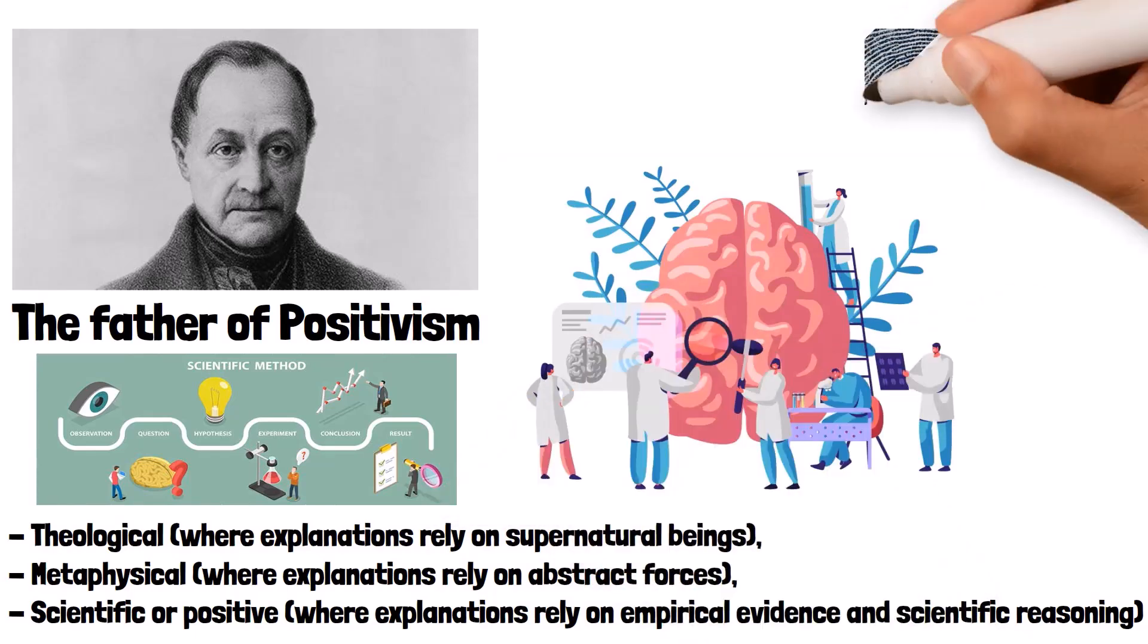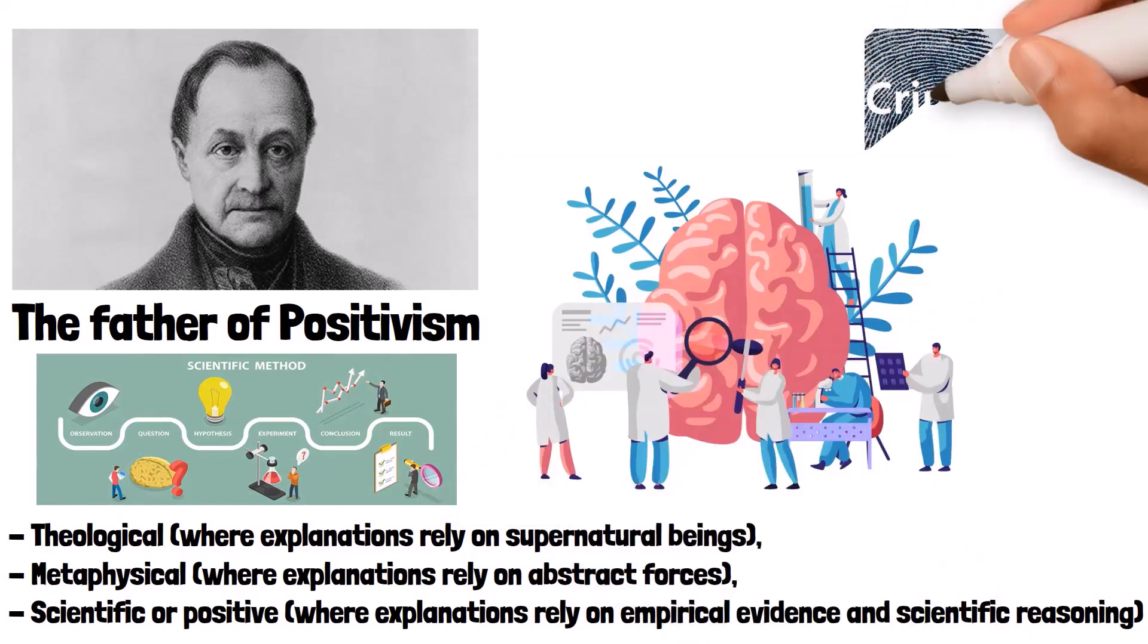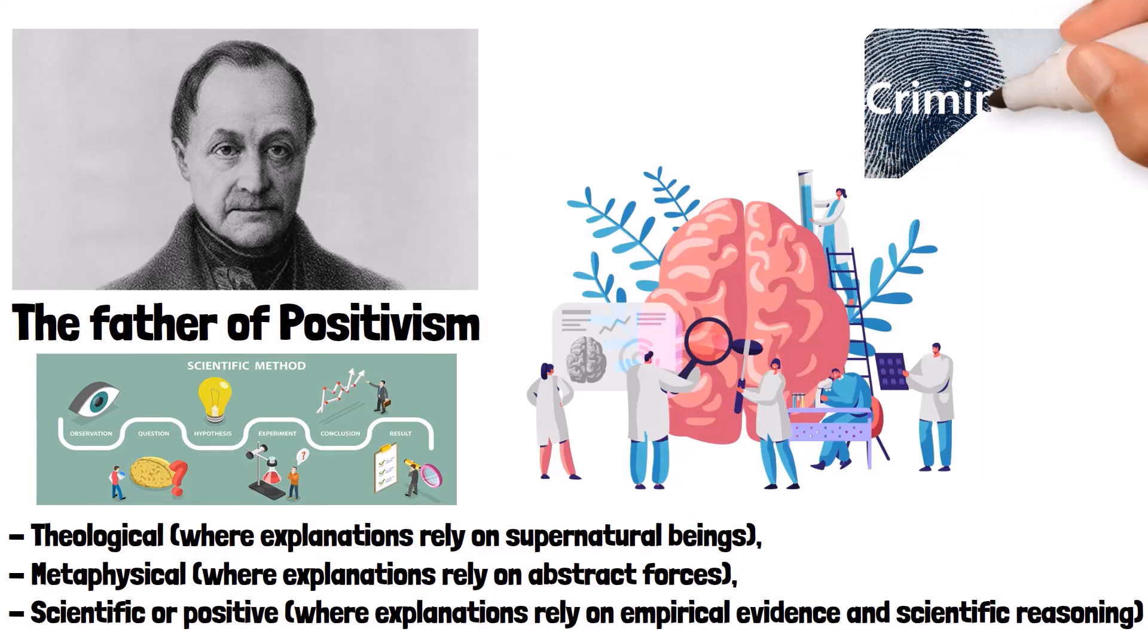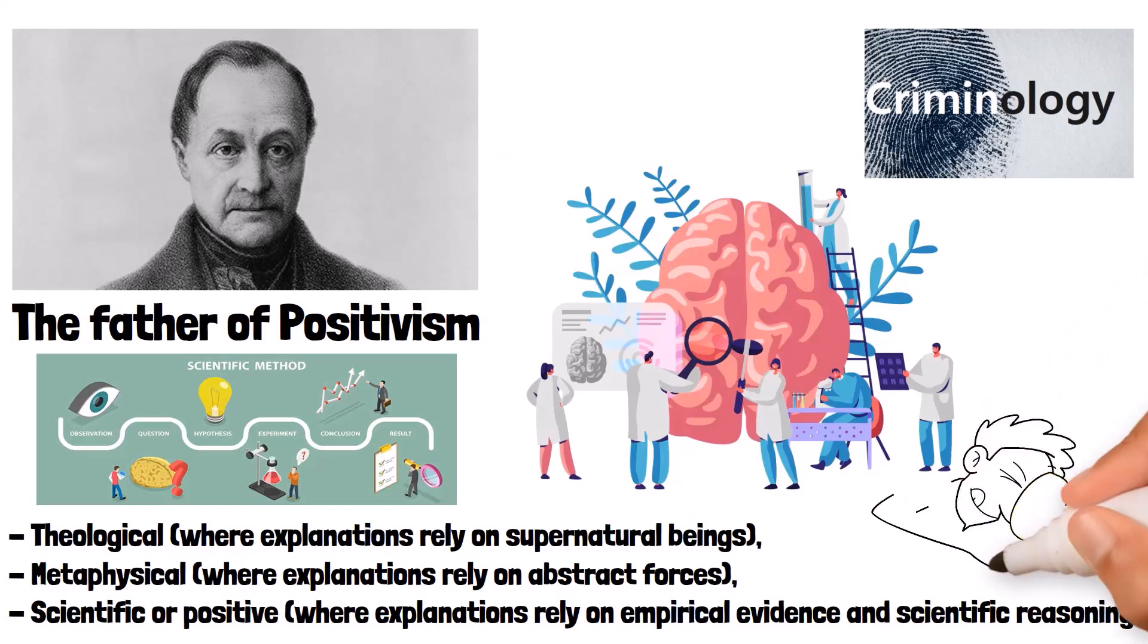For example, in criminology, positivist researchers might investigate the factors contributing to criminal behavior by conducting studies that analyze demographic data, psychological profiles, and social backgrounds of offenders. They might examine whether certain environmental factors such as poverty, lack of education, or peer influence are more prevalent among individuals who have committed crimes compared to those who haven't.